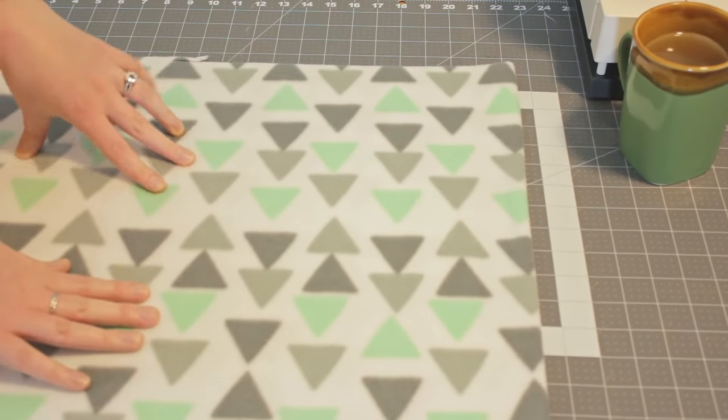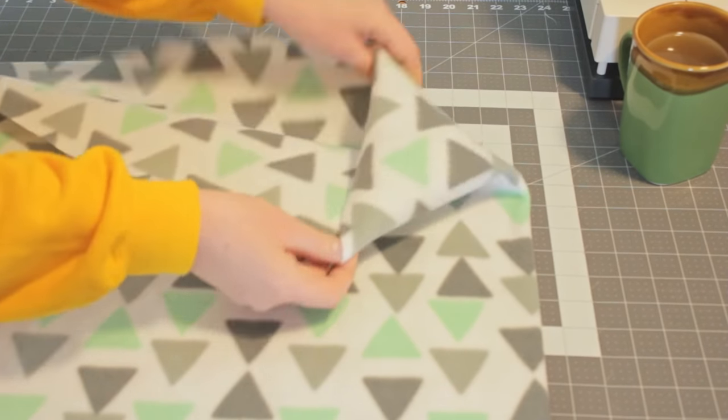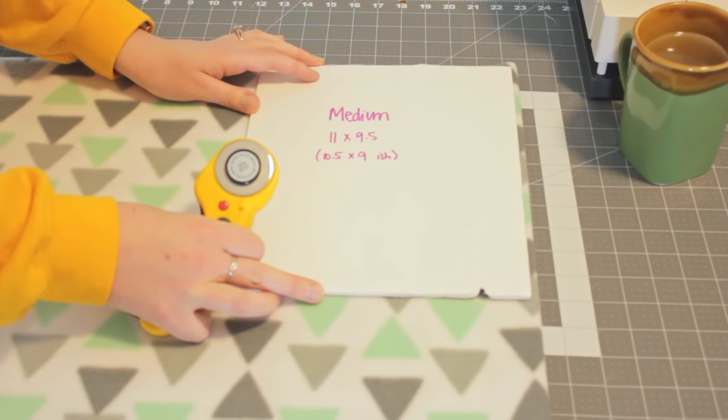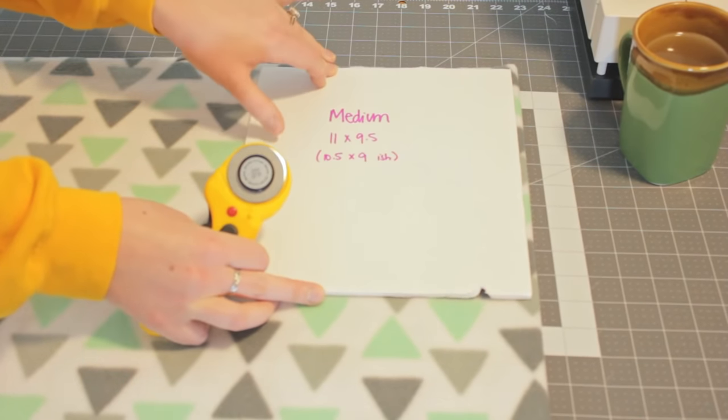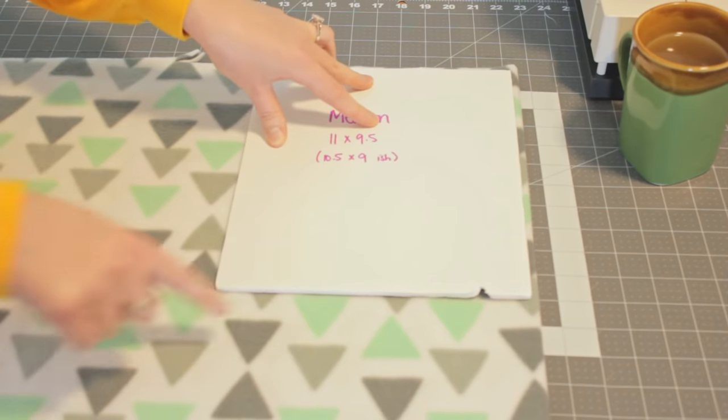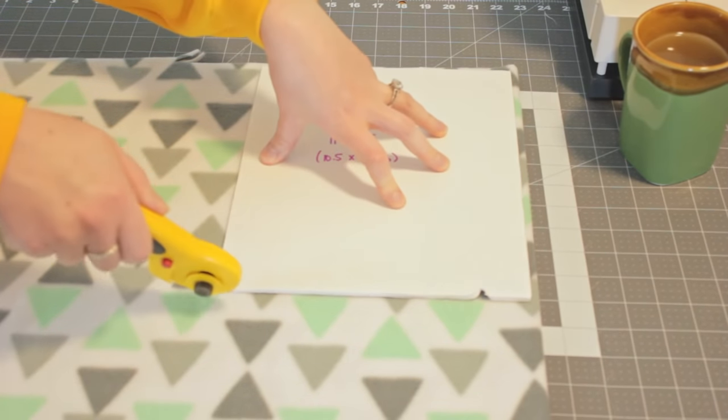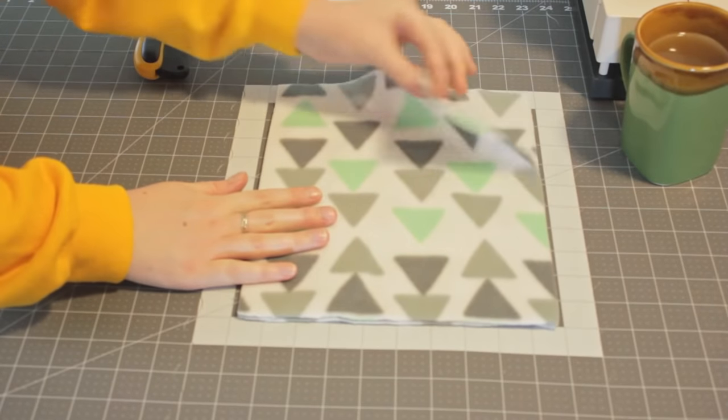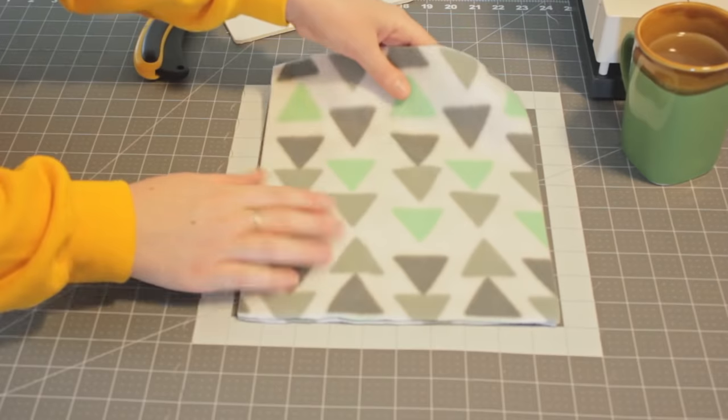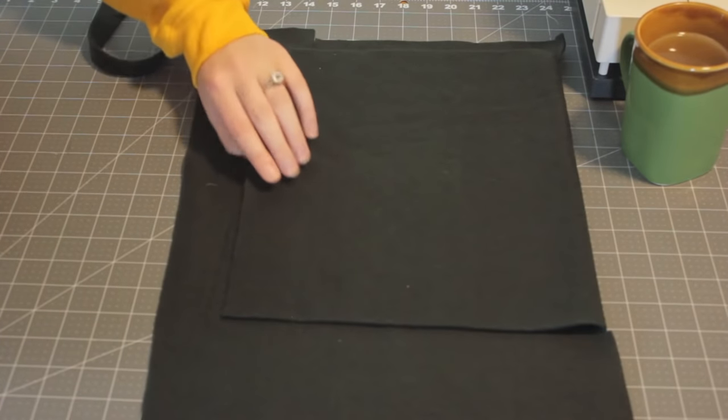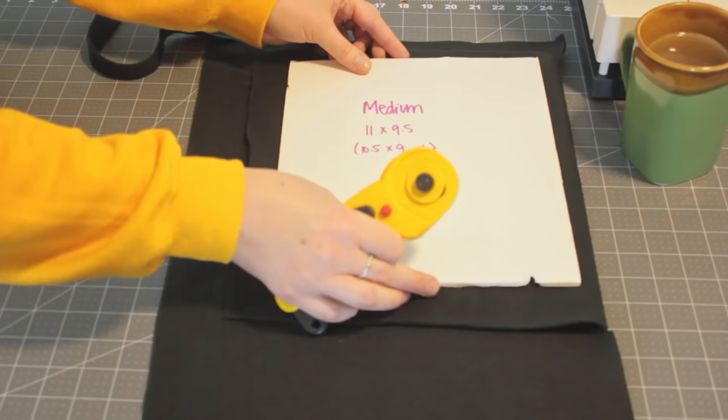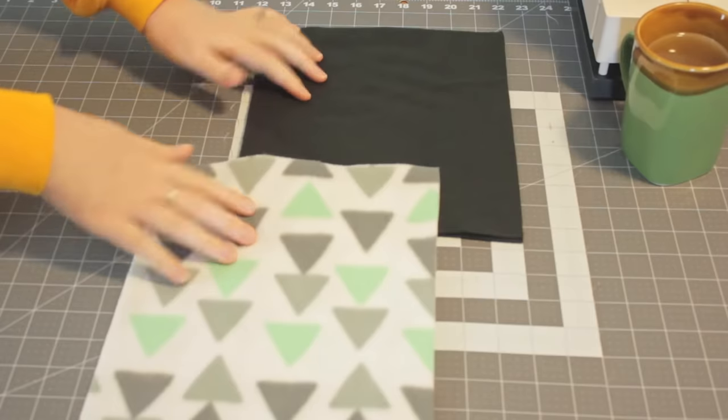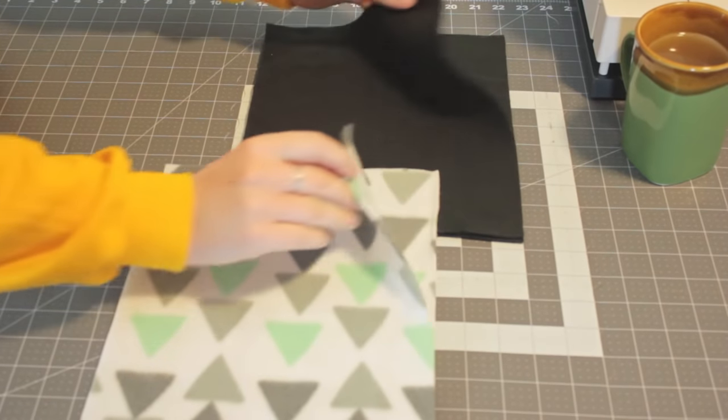Start by taking one of your fabrics and folding it in half. We're going to cut two pieces at the same time. Now I'm going to lay on my template here and I'm going to cut it out. If you're not using a template, then you would just use a quilting ruler or some sort of measuring tape to measure. Now that I have my two pieces of my one fabric cut, I'm going to set it aside. Now I'm going to take my other fabric and fold it in half, and then I'm going to cut out two pieces of this as well. Now I have four pieces of fleece.